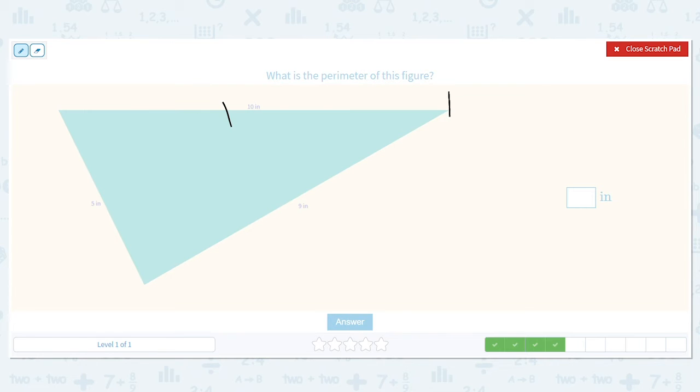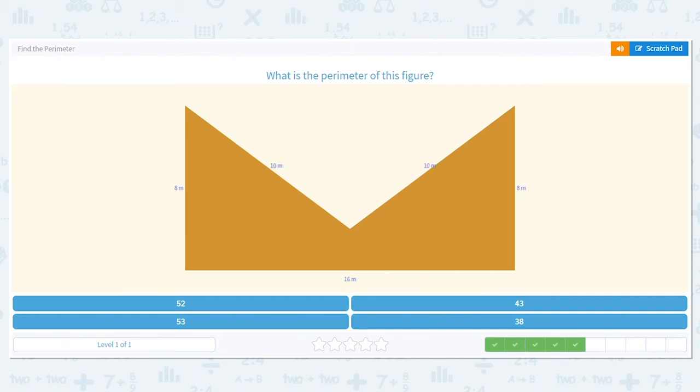How about this triangle? We have 10, 9, and 5. Here we go. I'm going to do 9 plus 5. That's 14. Then I bring down my 10. 10 plus 14 equals 24. 24 inches.